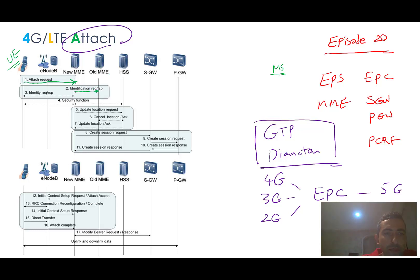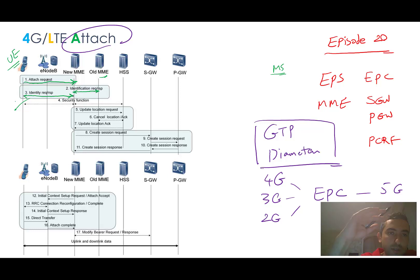If the old MME has this information, it will send it back to the new MME. If not, another step is needed: an Identity Request/Response. If required information such as IMSI or IMEI is not available from the old MME, the new MME will ask for this information directly from the User Equipment via S1AP.